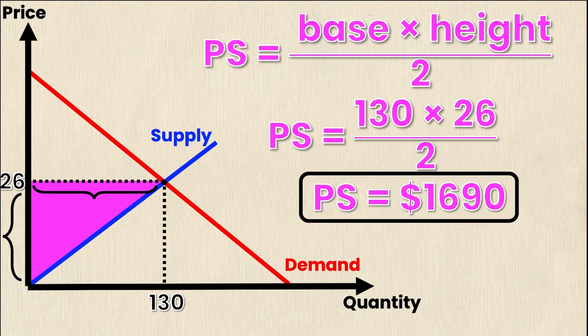You might be wondering why is it in dollars? Well consumer and producer surplus are always in terms of whatever the y-axis price is. So in my case I'm from Canada we use dollars and so my producer surplus is going to be in dollars.